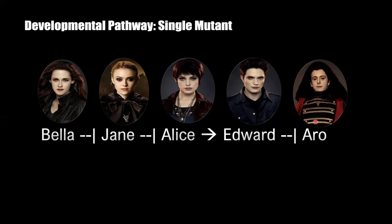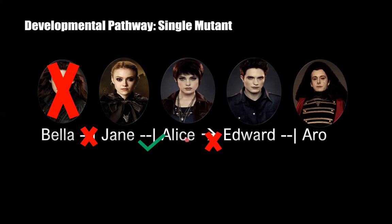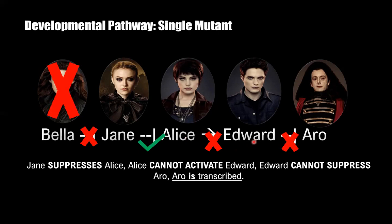In a single mutant situation, when we take out Bella, that leaves Jane activated. When Jane is activated she suppresses Alice, and when Alice is suppressed she cannot activate Edward. When Edward isn't activated he cannot suppress Ro, which means that Ro is transcribed.